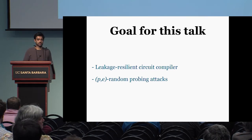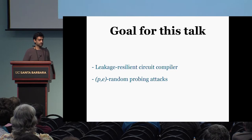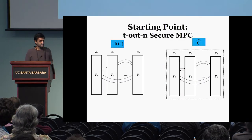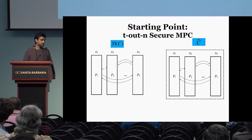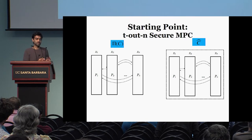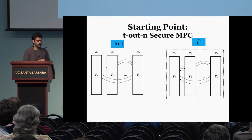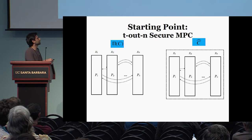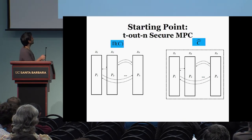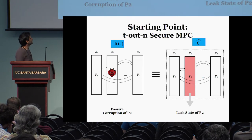So let me explain the techniques used in this work. The goal for this part of the talk is to focus on leakage-resilient circuit compilers tolerating random probing attacks. The starting point is a T-out-of-N secure MPC protocol — this MPC protocol tolerates T adversaries and N is the number of parties. I'm going to view this MPC protocol slightly differently: instead of viewing it as a protocol, I'm going to view it as a compiled circuit. So an MPC protocol for a circuit C will be viewed as a compiled circuit C-hat.